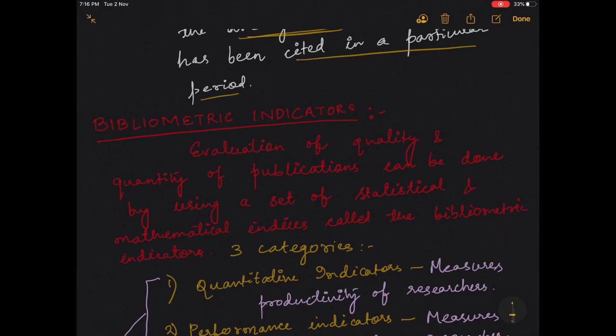So before coming to the topic proper, we need to go through some indicators which are known as bibliometric indicators. What are these bibliometric indicators? They evaluate the quality and quantity of publications that can be done by using a set of statistical and mathematical indices.